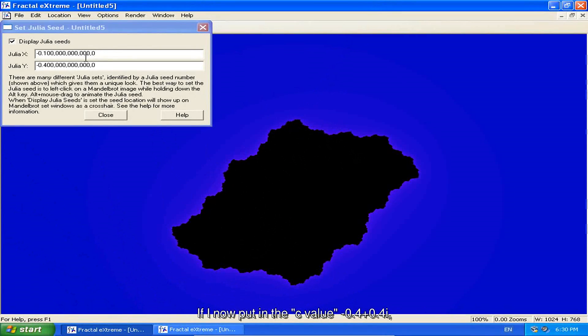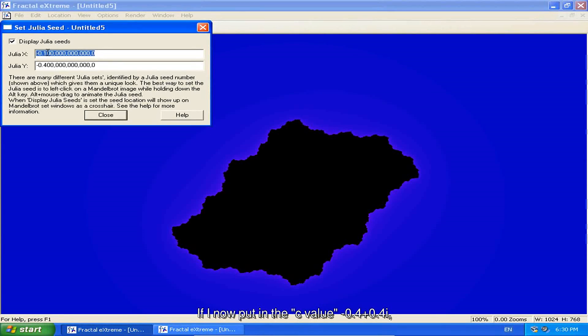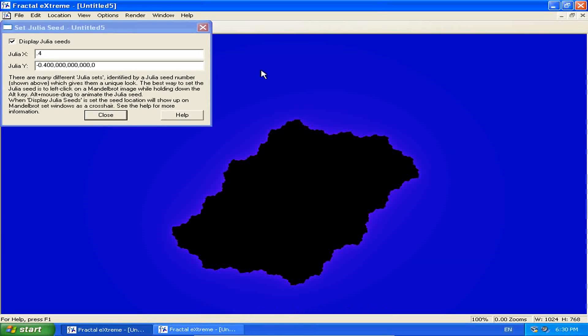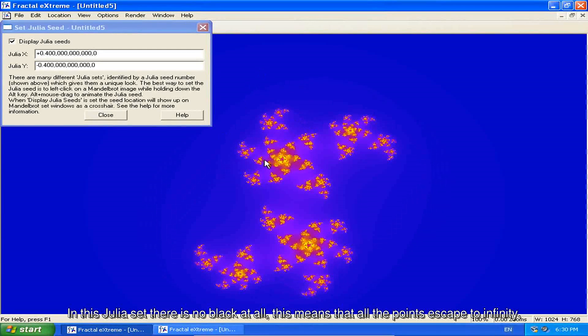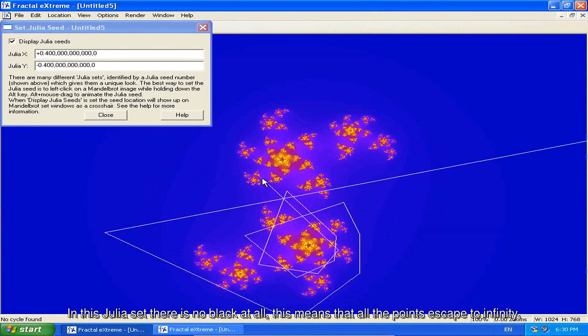If I now put in the c value 0.4 minus 0.4i, in this Julia set, there is no black at all. As I said, this means that all the points escape to infinity.